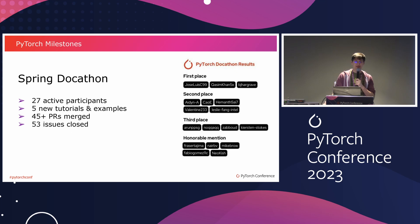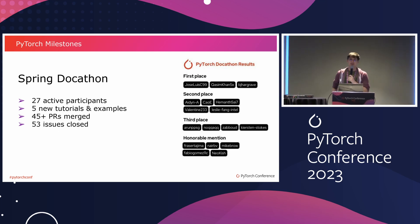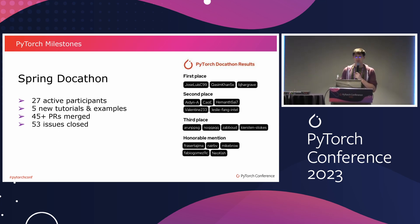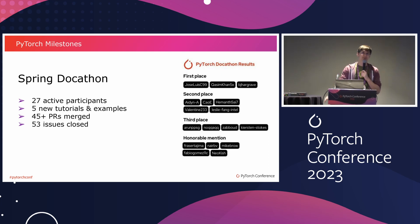Another important milestone was the sprint that happened this year, where we had 27 participants, 45-plus PRs merged, and 53 issues closed. It was very helpful in improving our tutorials repo, improving quality, adding new tutorials, and making sure we have all up-to-date tutorials.